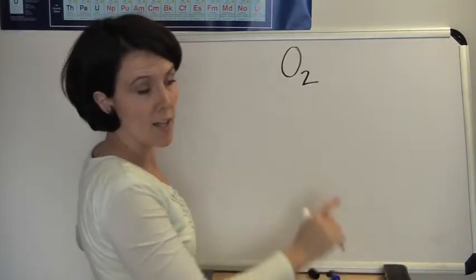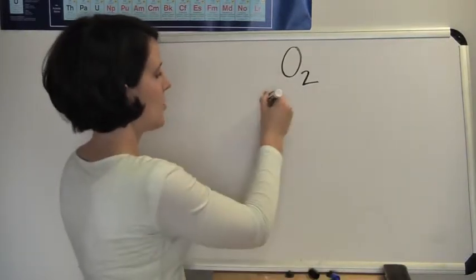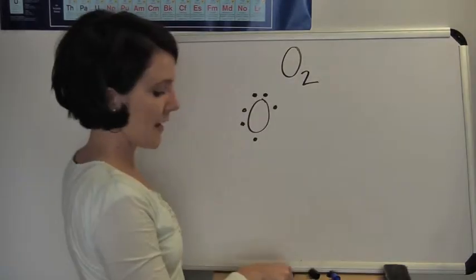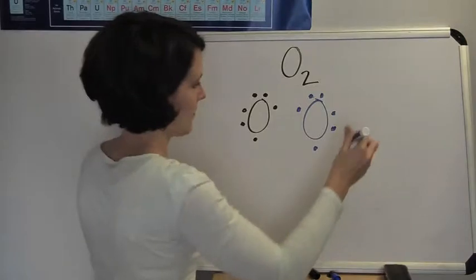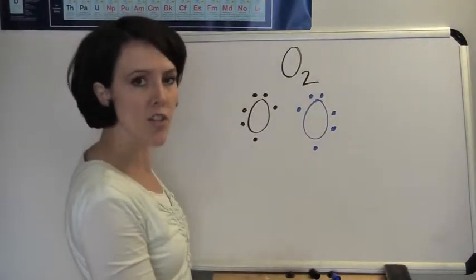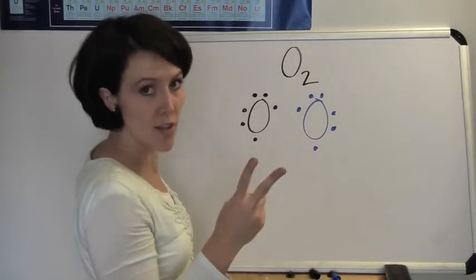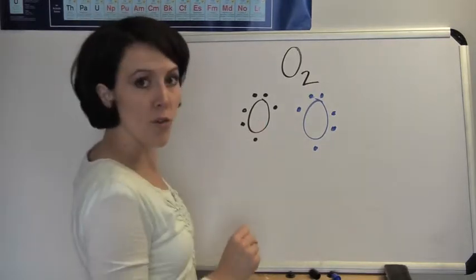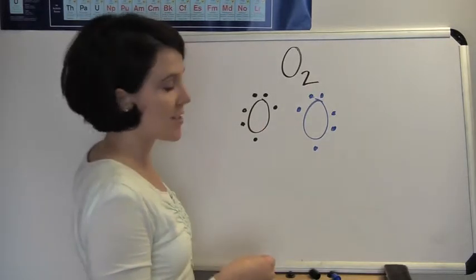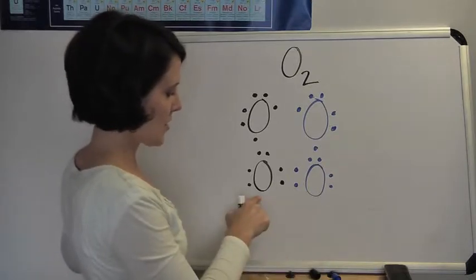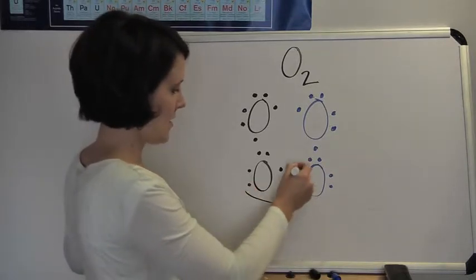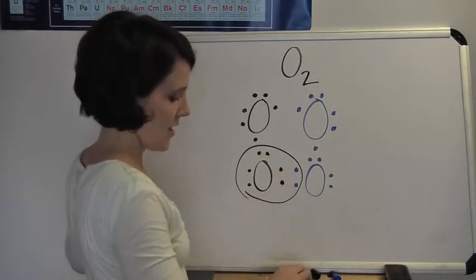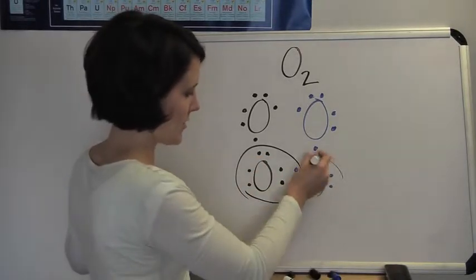What about the diatomic element oxygen? The Lewis symbol for one oxygen atom has two pairs and two unpaired electrons. With two oxygen atoms, oxygen only needs two more electrons to achieve an octet, so oxygen will form a double bond. Each oxygen believes it has eight electrons and is stable.